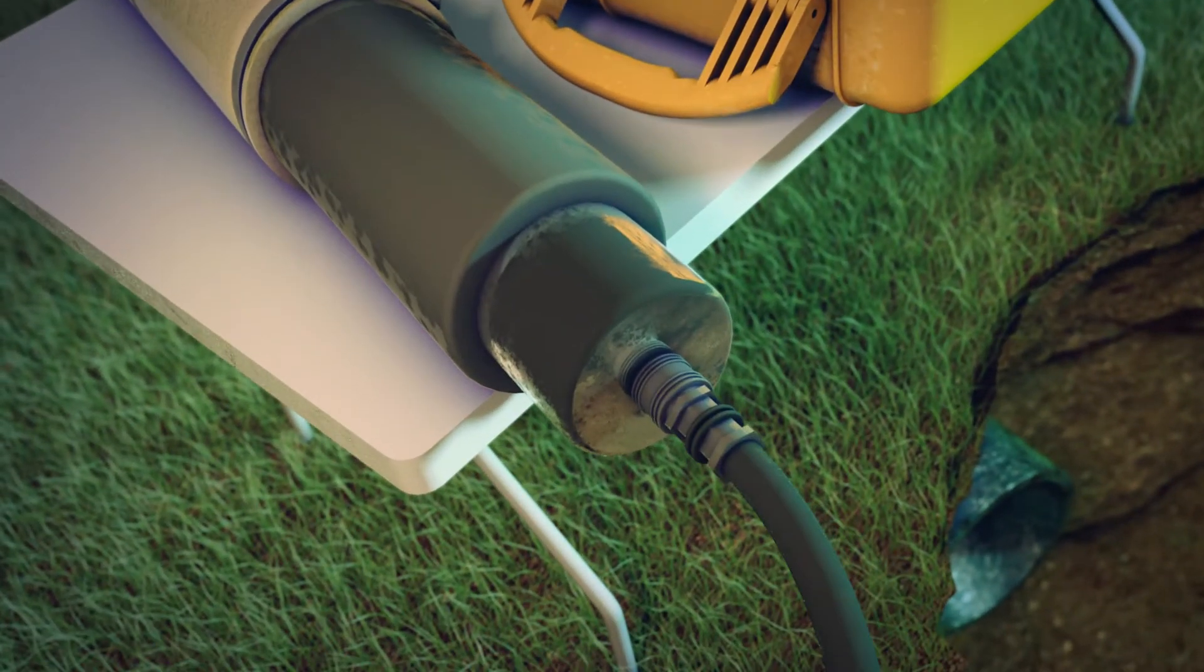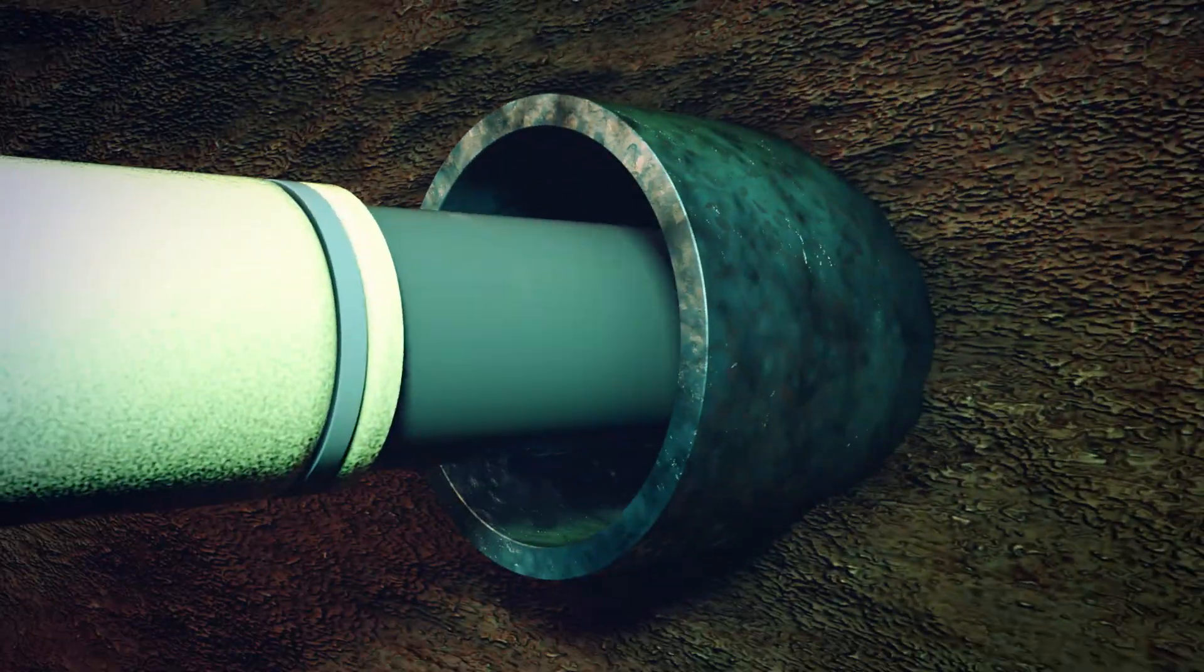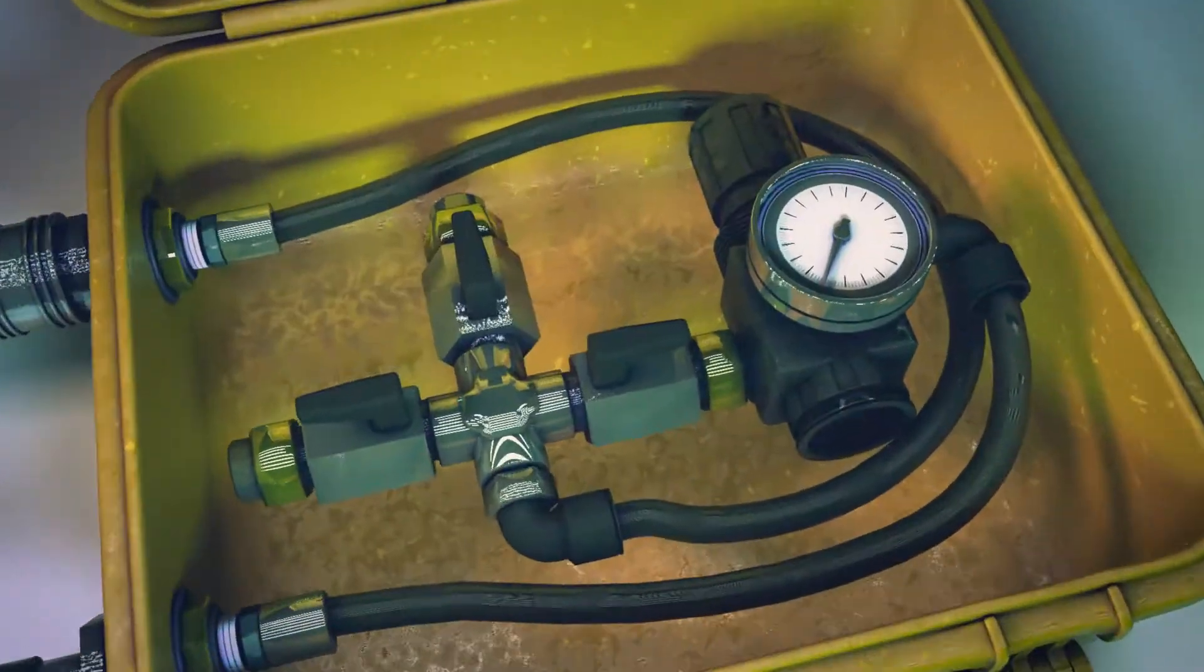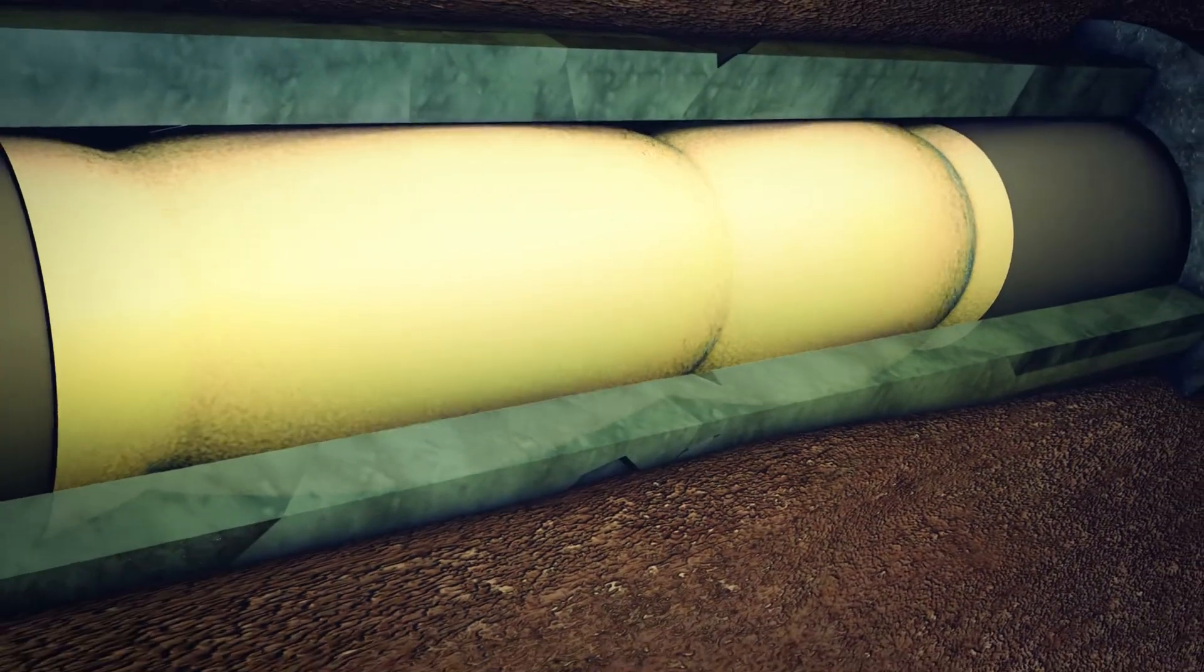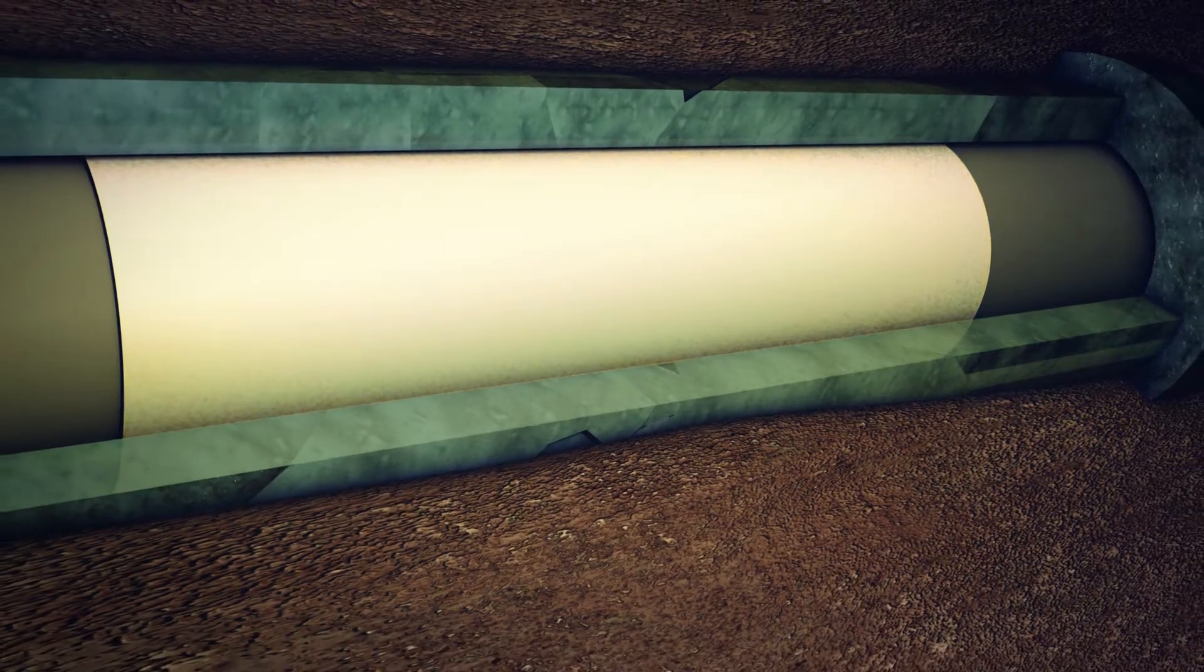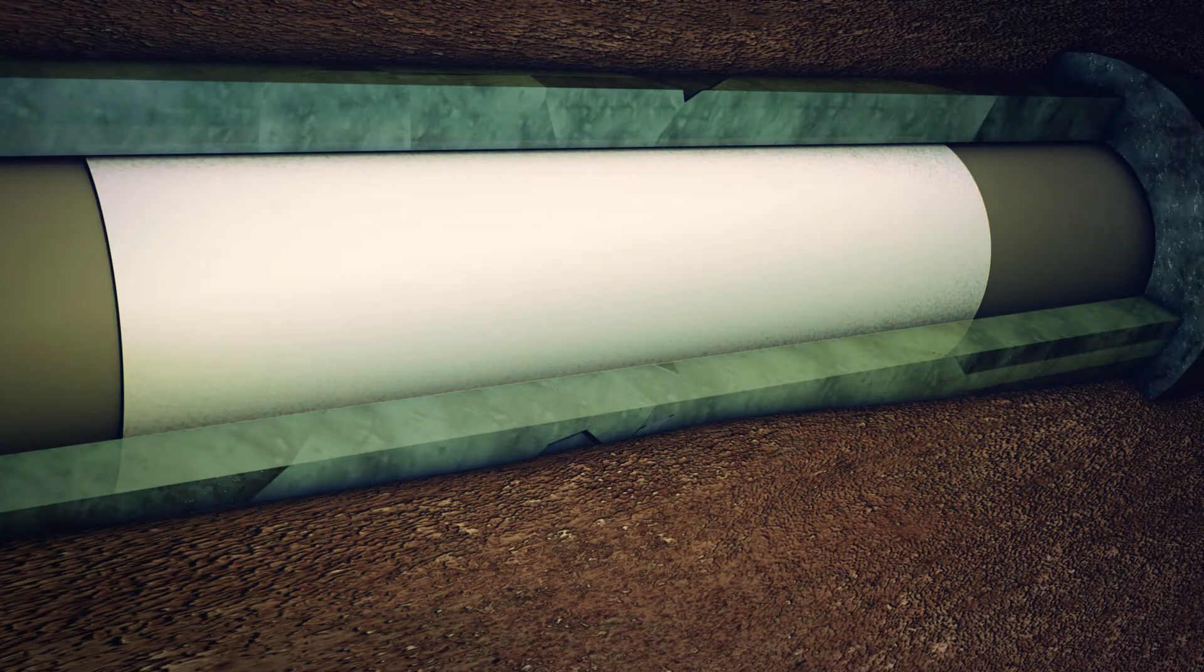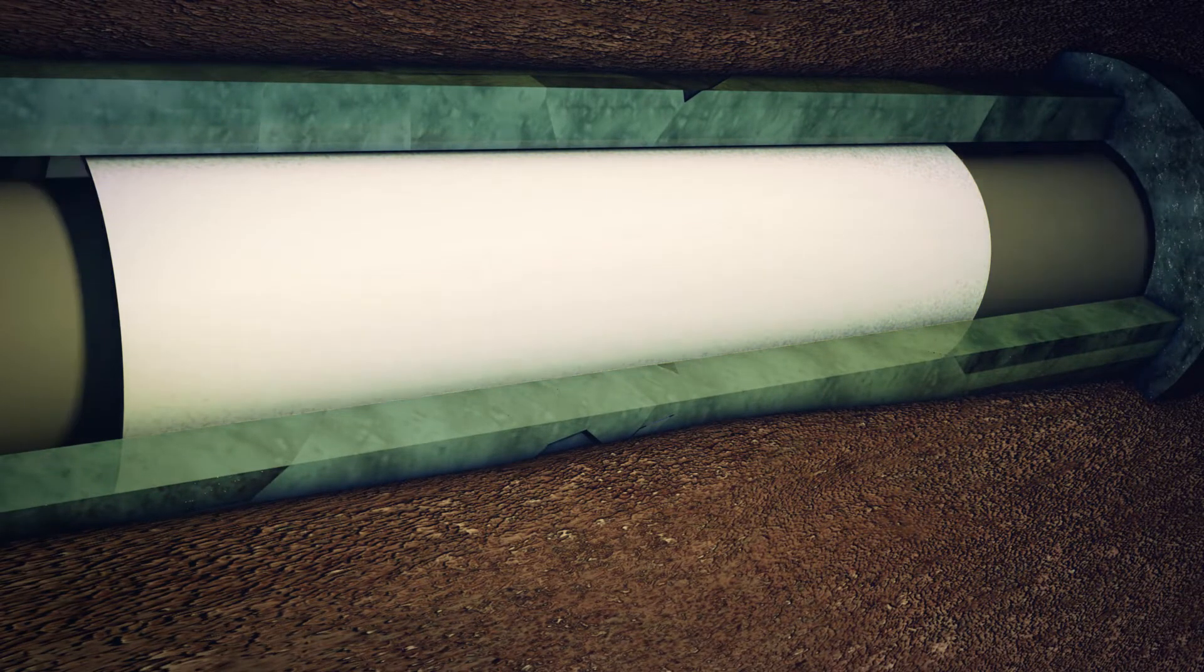The packer is inserted into the pipe and inflated. The ties are released and the fiberglass mat is pressed against the inner surface of the pipe. Once the resin has cured, the packer is deflated and removed, leaving a fully structural repair that will last 50 years or more.